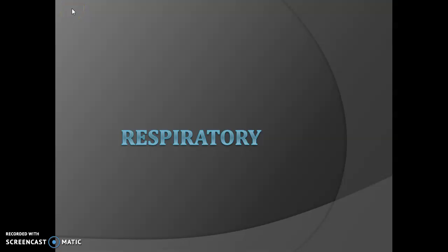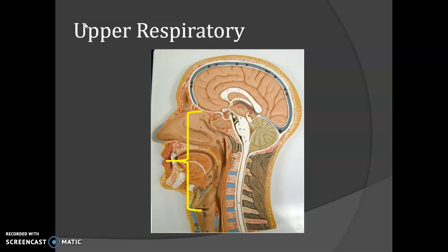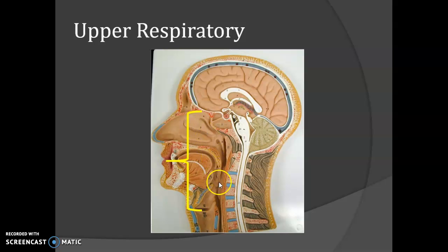Today we're going to be working with the respiratory system — remember it's included for your lab practical. The respiratory system is structurally divided into a conducting portion and a respiratory portion. This is the upper respiratory system, which is for conduction. The organs of the conducting portion form the airway extending from the nose down into the lungs, and they include the nose, the nostrils, the nasal cavity, the pharynx — which has nasal, oral, and laryngeal parts — and finally the larynx.